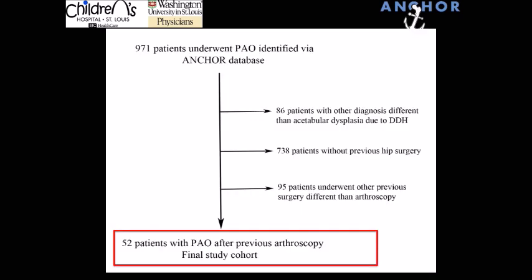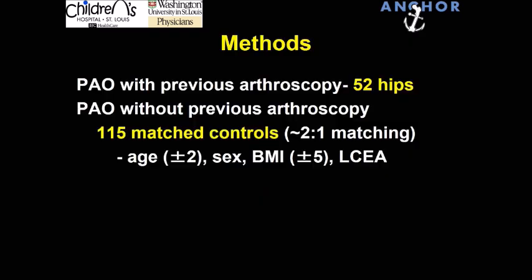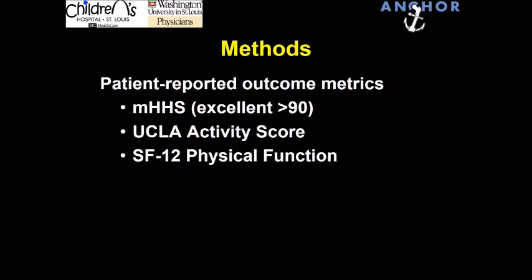We started with 971 patients. After applying exclusion criteria and screening, we have 52 patients who underwent PAO for symptomatic acetabular dysplasia after a failed arthroscopy. We compared those patients to a matched group of 115 hips in patients that underwent PAO without previous hip arthroscopy, matched by age, sex, BMI, and lateral center edge angle. We looked at patient-reported outcome metrics: the Harris Hip Score, UCLA score, and the SF-12 physical function score.